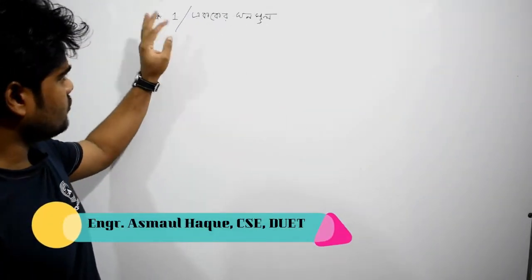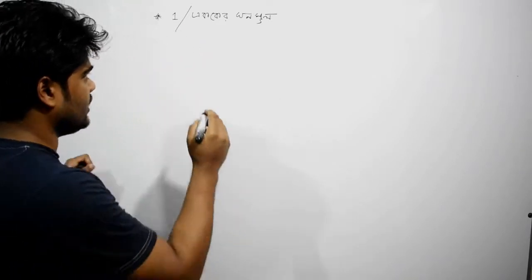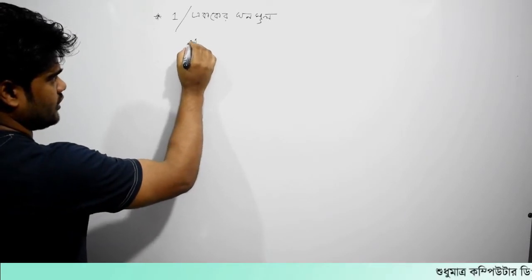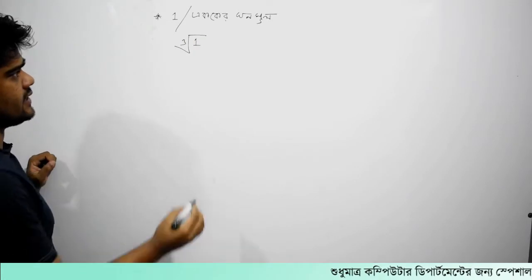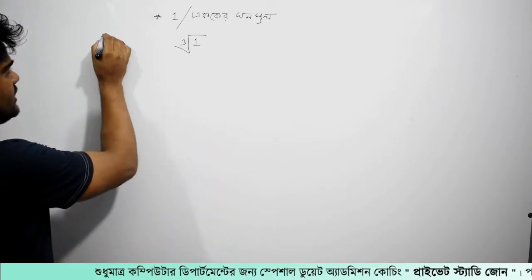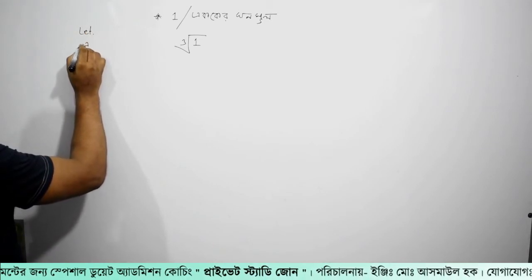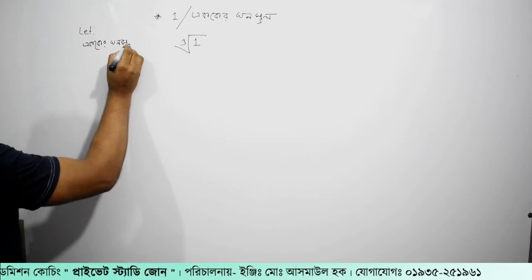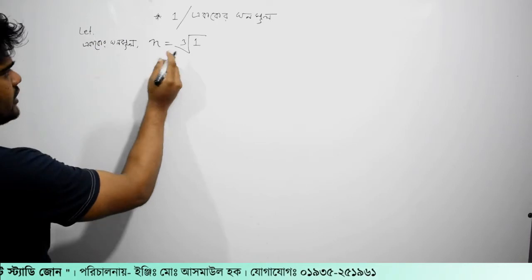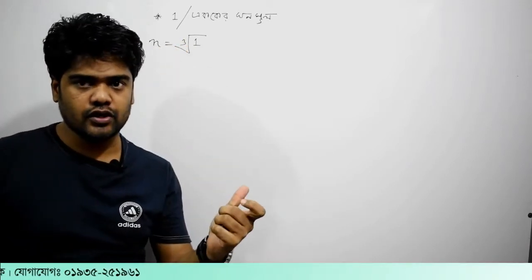સ્રલેમ તામરા સલ્પ કરવો, આમરા સલ્પ કરવો. એકોકેર ઘન મોલ નિનાય કરો, એકોકેર ઘન મોલ. (Introductory phrases in Gujarati/Bengali, likely a greeting or song fragment related to the topic of cube roots.)